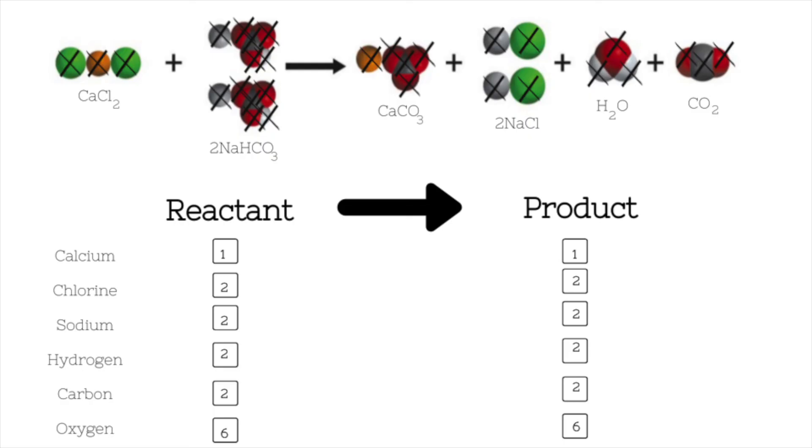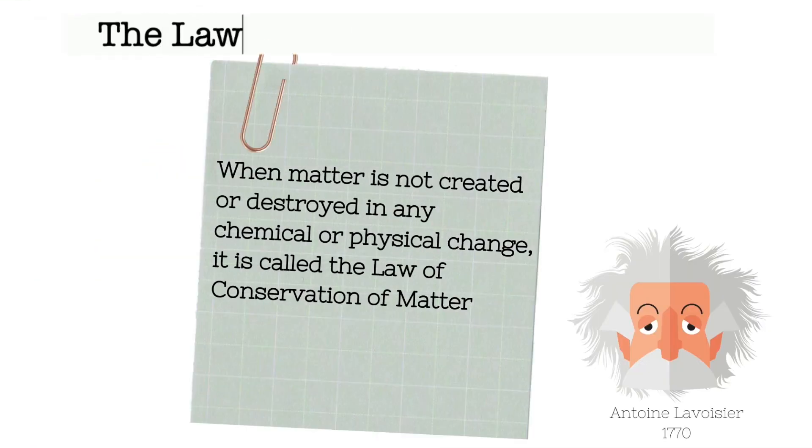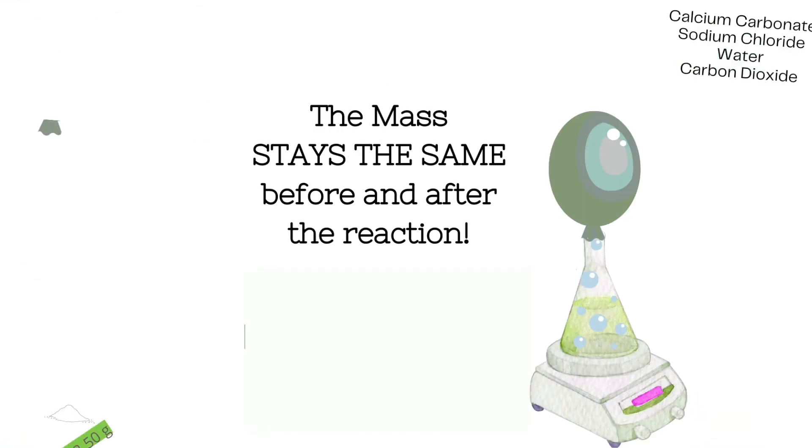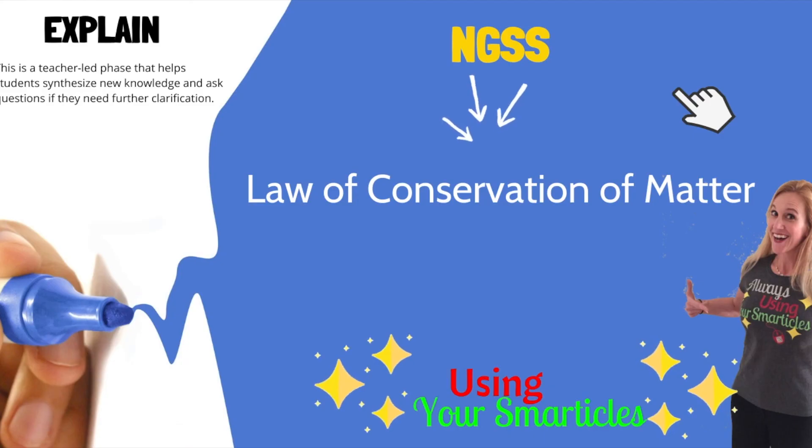So what have we learned crossing off all of these atoms? Well, we've learned that the reactant side of our equation has the exact same number of atoms as the product side of a reaction, even though the atoms rearranged. Nothing was gained and nothing was lost. This is the law of conservation of matter. And no matter what chemical reaction takes place, this will always be the case. The mass will always stay the same before and after the reaction. Appreciate it all. Thank you.